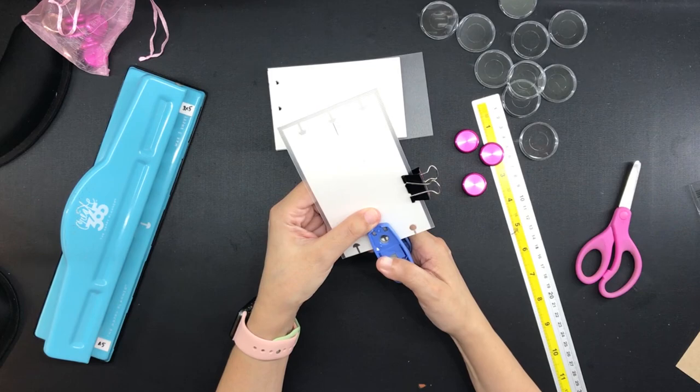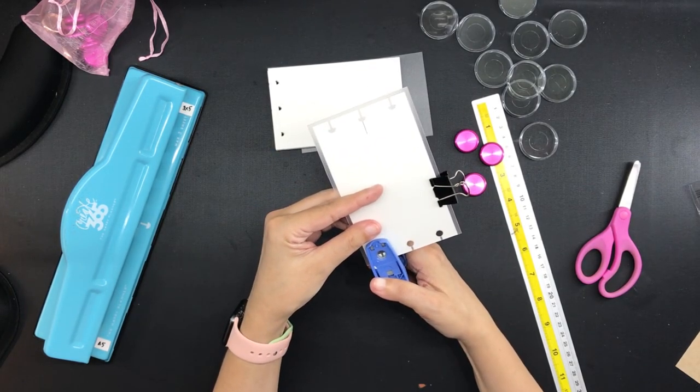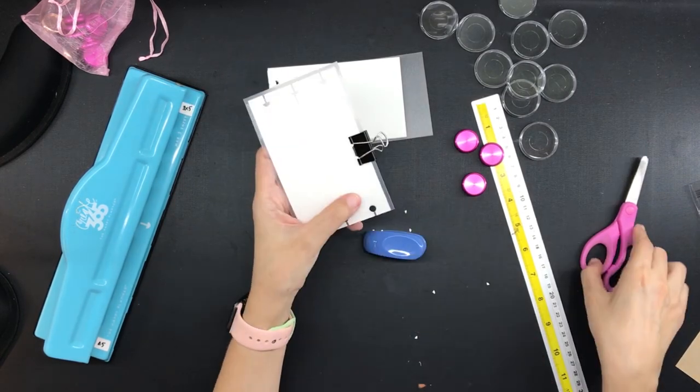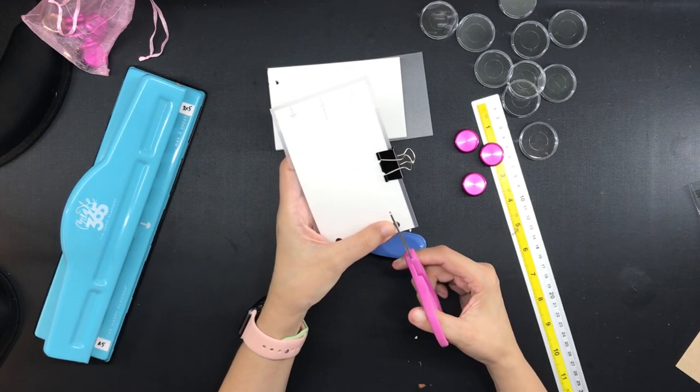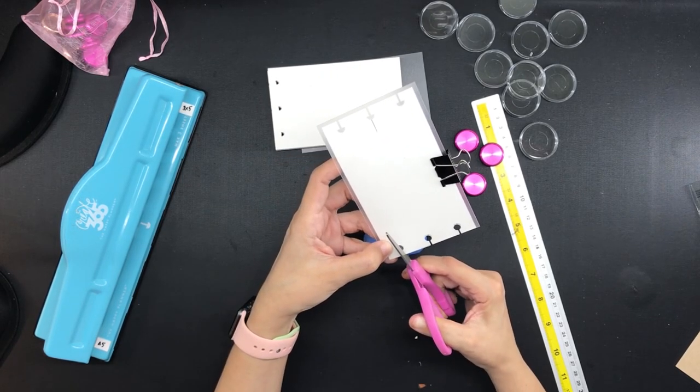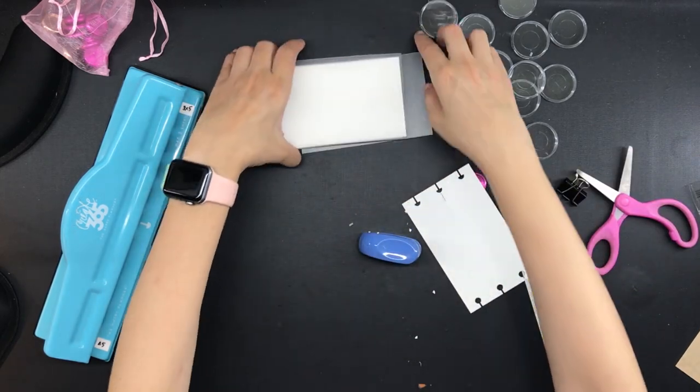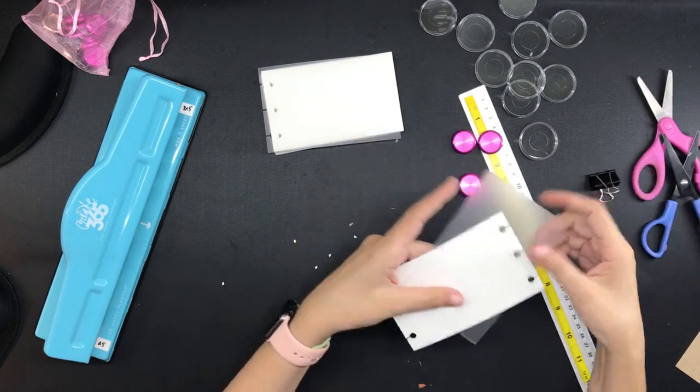This has always been how I hole punched plastic sheets for the disc bound system because the Happy Planner punch, at least this one that I have, cannot punch plastic. I did it before, I tried it before and it jammed and it was terrible and I never did that again. And so that's one cover done and then here is the other and now finally we can put everything together with the magenta metal discs.